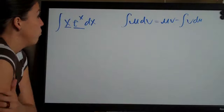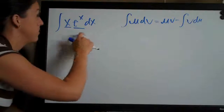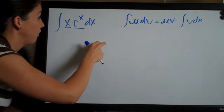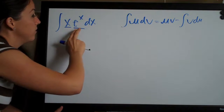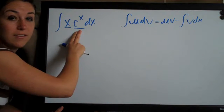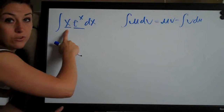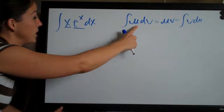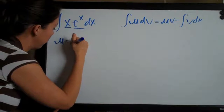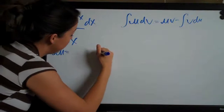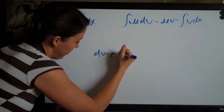The easiest way to do it is to assign u to something that will become simpler when you take its derivative. In this case, that's definitely x. The derivative of e to the x is still e to the x, which doesn't simplify at all, but the derivative of x is one, which is much simpler. So we assign u to x and dv to the other value in our problem, e to the x dx.